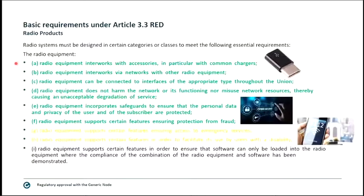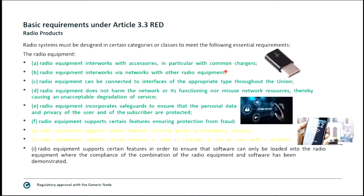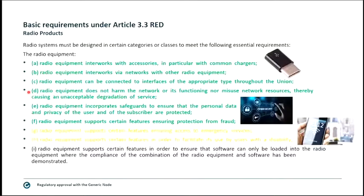Starting with A: the radio equipment interworks with accessories, in particular with common chargers. For example, mobile phones now use USB-C chargers. Radio equipment interworks via networks with other radio equipment, meaning the device is as compatible with other networks as possible. Radio equipment can be connected to interfaces of the appropriate type throughout the European Union. Radio equipment must not harm the network, causing unacceptable degradation of services — for example, a device sending permanently and blocking other devices out of the channel.